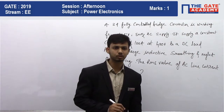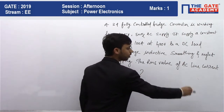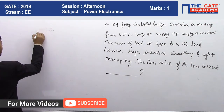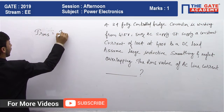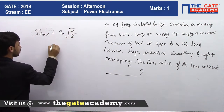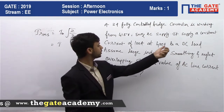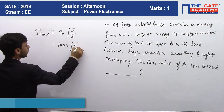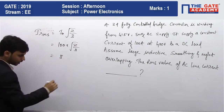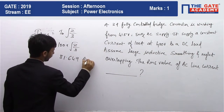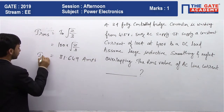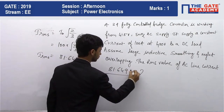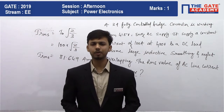This is a very direct formula-based question. The formula for the RMS value of the line current is: I_RMS = I₀ × √(2/3). Here, I₀ is given as 100 ampere. So we calculate: 100 × √(2/3), which gives us the answer as 81.649 ampere. That is the RMS value — 81.649 amps.